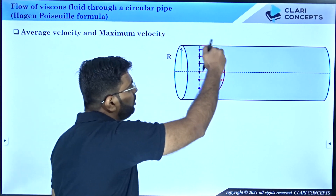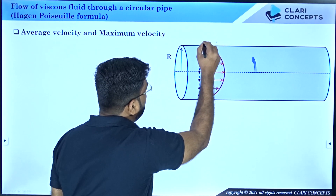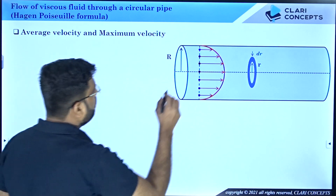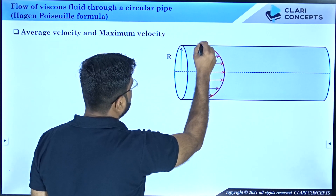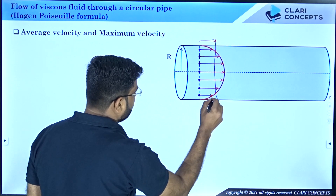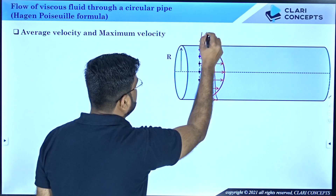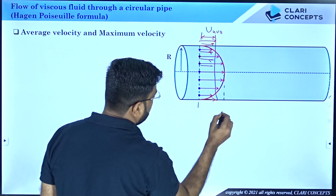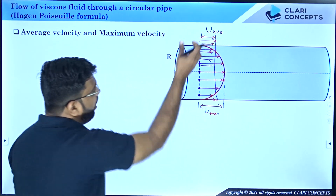The velocity distribution gives values from maximum (at center) to zero (at boundary). We want to find the cross-sectional average velocity U_average. In one section, U_maximum is at the center. The average velocity will be determined from the entire cross-section.